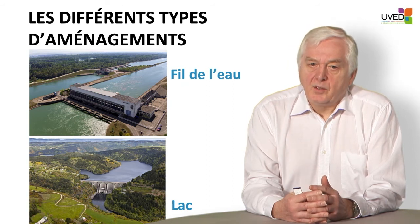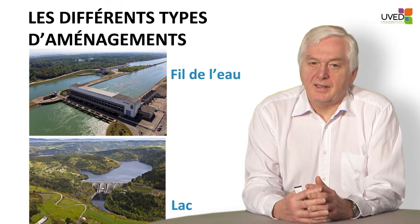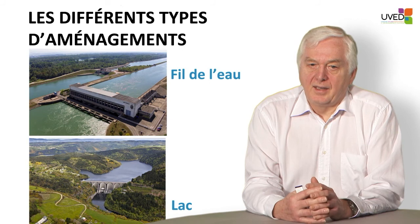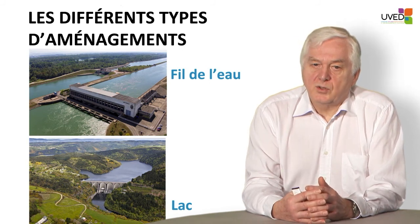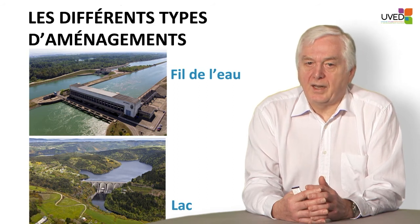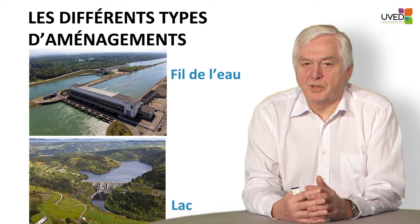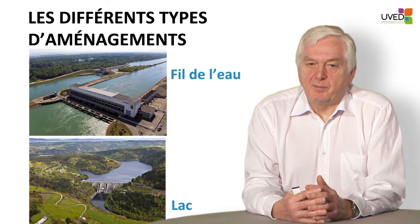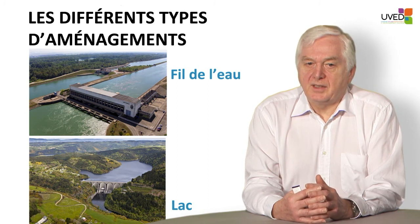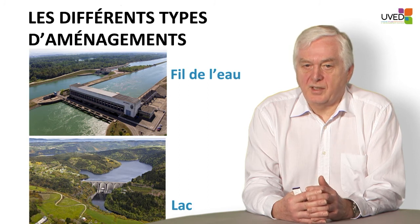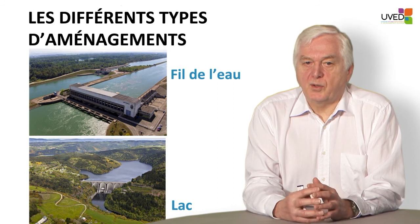The reservoir level decreases when the turbines are in use and increases when the power plant is stopped, creating a variable tidal level in the reservoir. The last example is lake power plants, where it is possible to retain several million cubic meters of water behind the dam, especially when mountain snow melts. We have such lake plants in the Pyrenean mountains and the Alps. The quantity of energy stored is huge and can be injected into the electric grid when there is peak consumption.